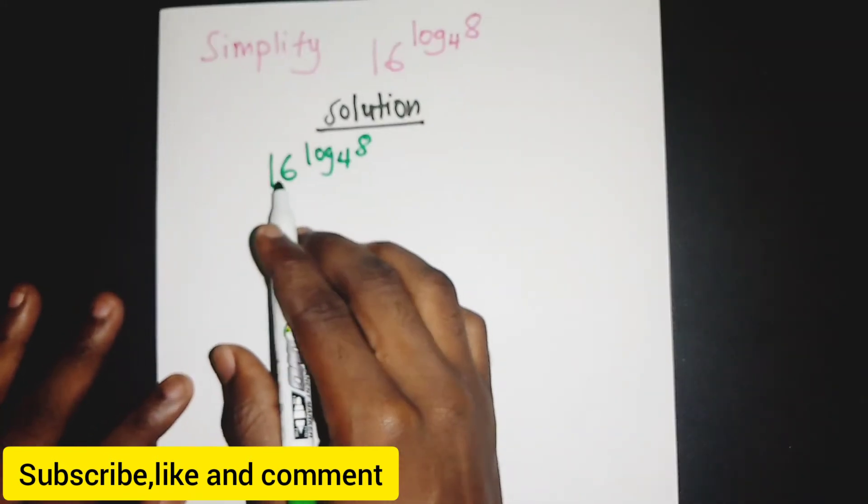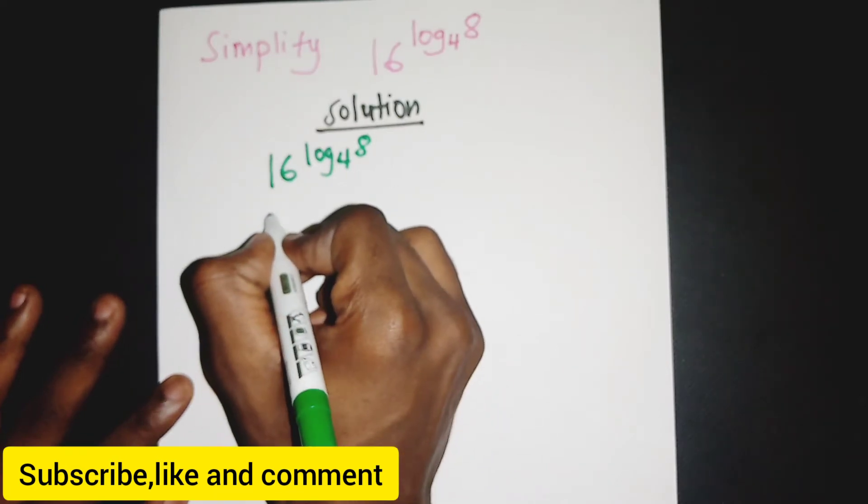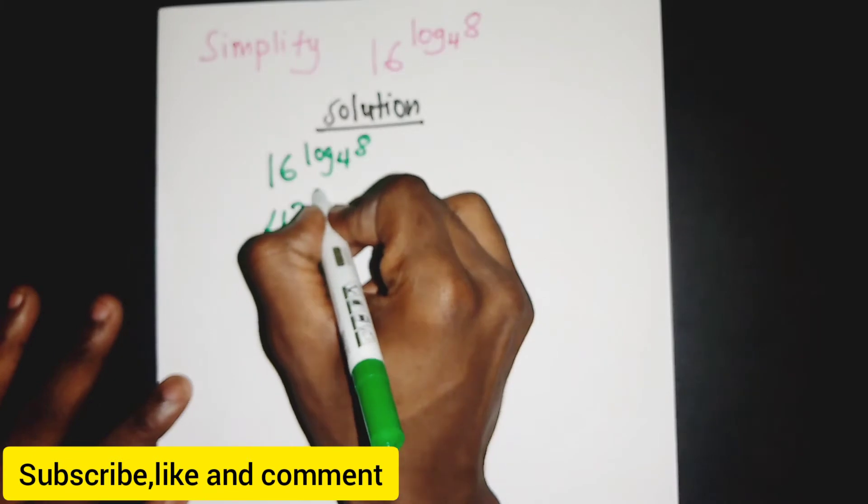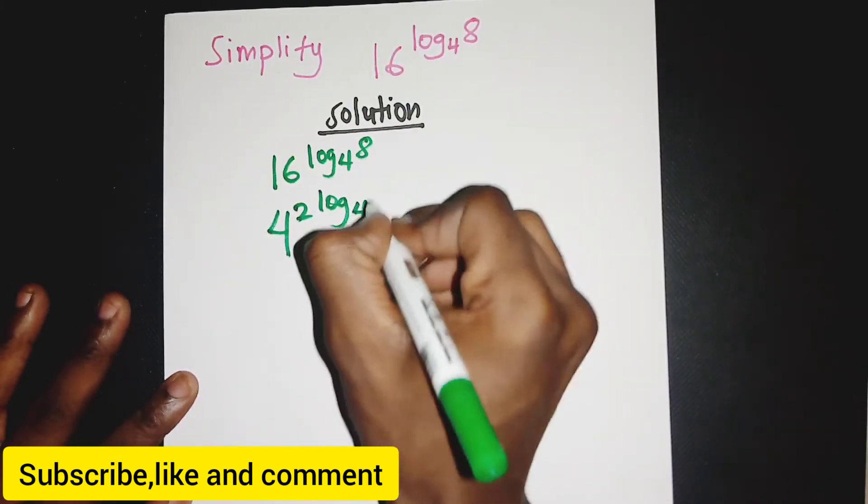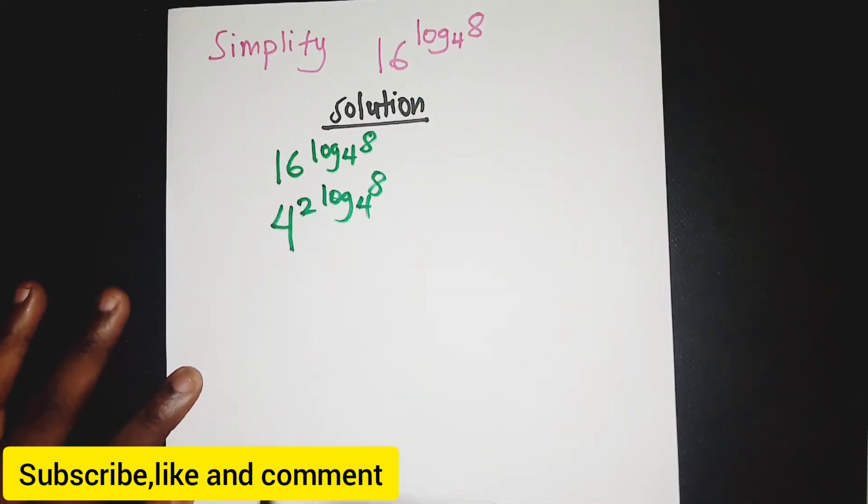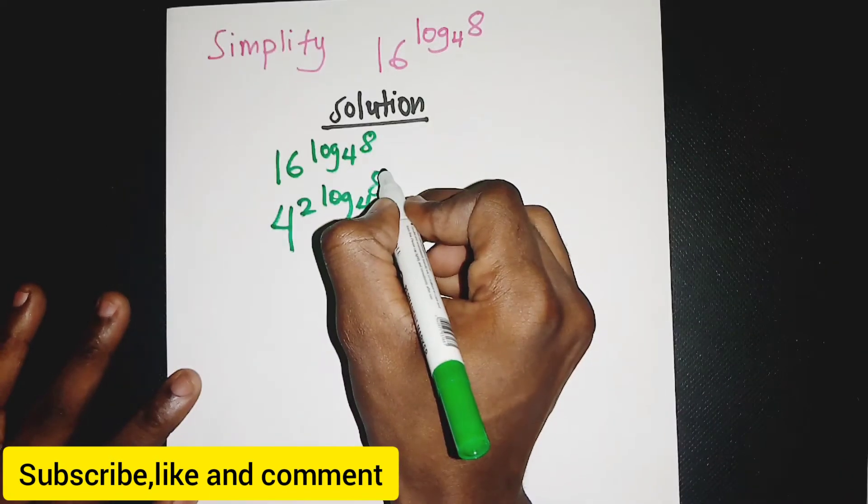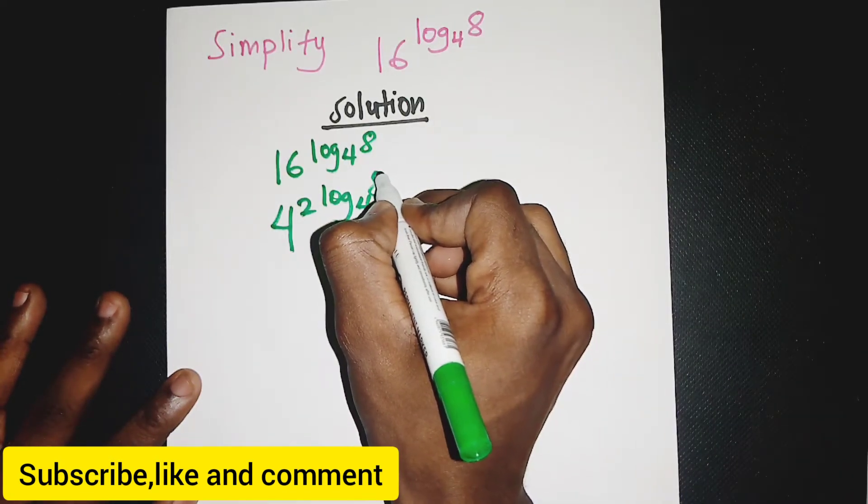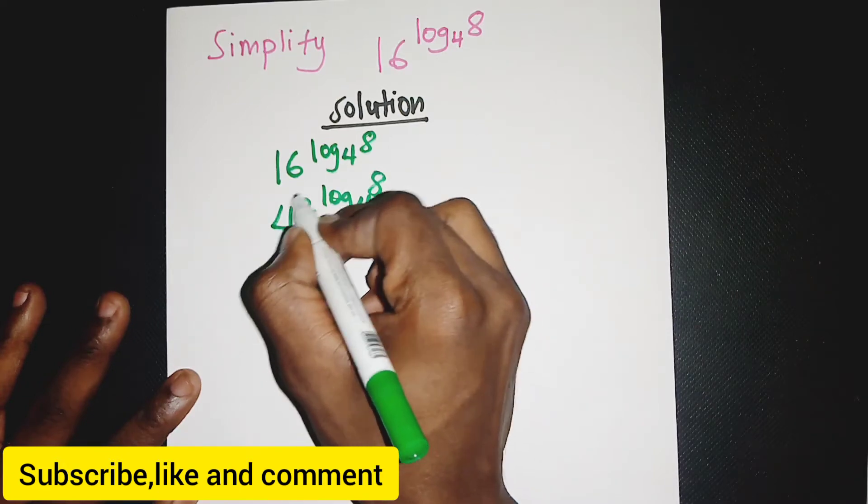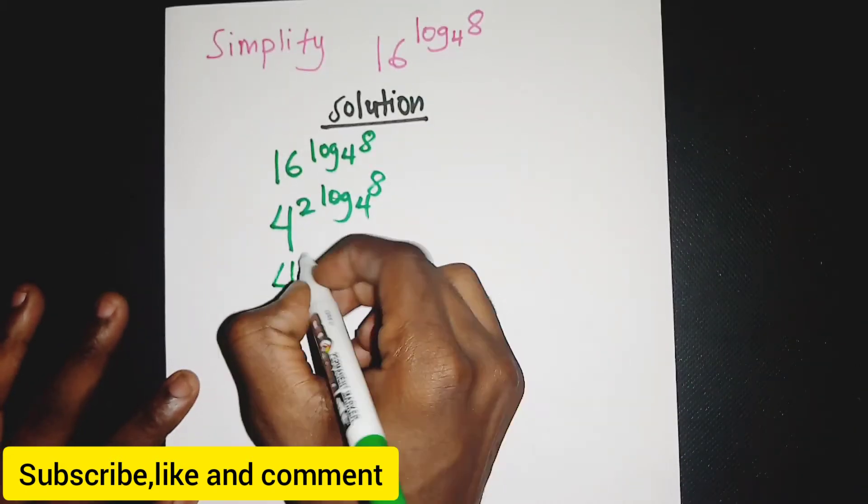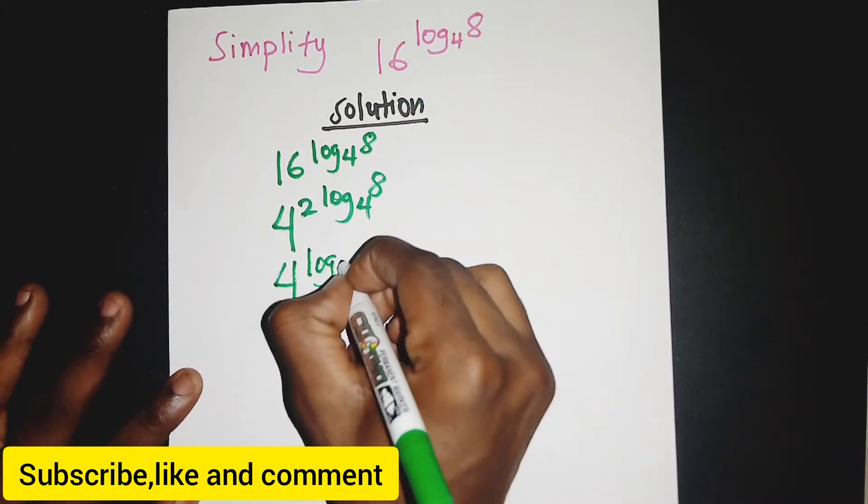This 2 here can move using one property of logarithm. The 2 in the exponent can move to the power over here, so we have 4 to the exponent log base 4 of 8, then we have 2 to that power.